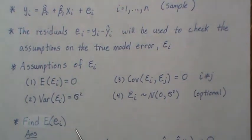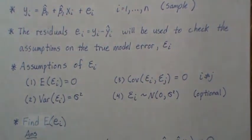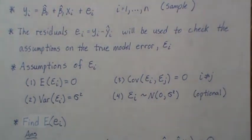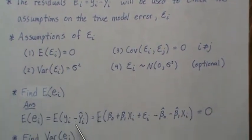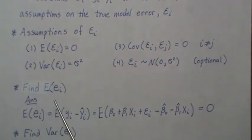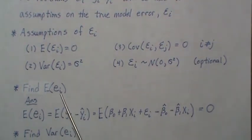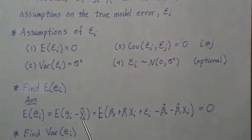We're going to go through each assumption in a scalar derivation, then redo it in matrix notation — which takes about four or five lines where the scalar version takes two to three pages. The mean of our residual is Y minus our least squares line.